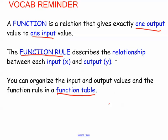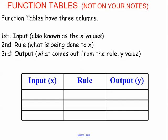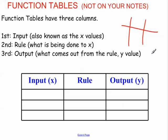Pause the video if you need to. Now let's look at what a function table is. This is not on your notes, so we're just going to be talking about it. A function table will have three columns. It might look like this, or it might also look like this — maybe straight. It can also get to the point where you just have an x and a y input, but for right now we're going to use the one that has three columns.